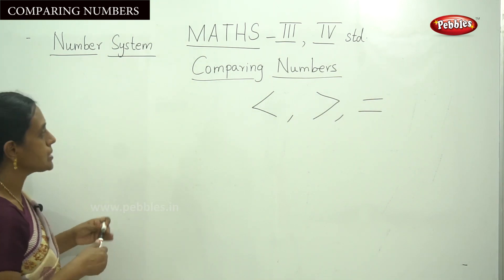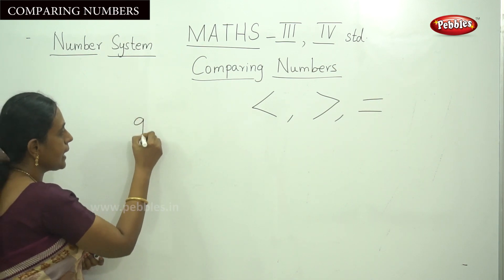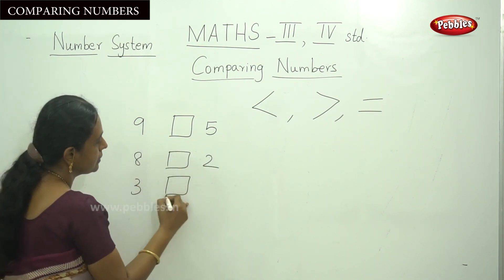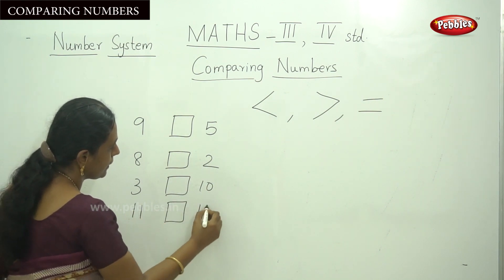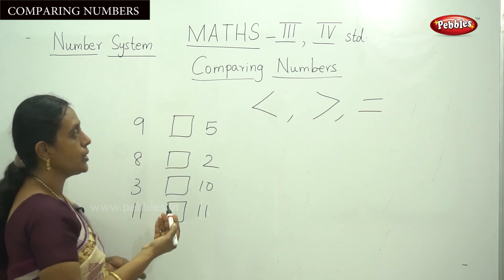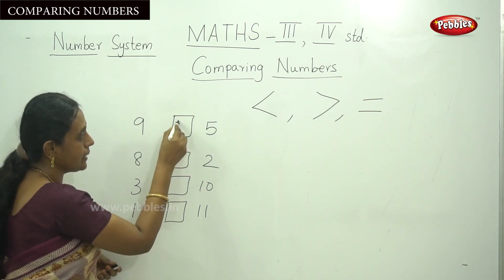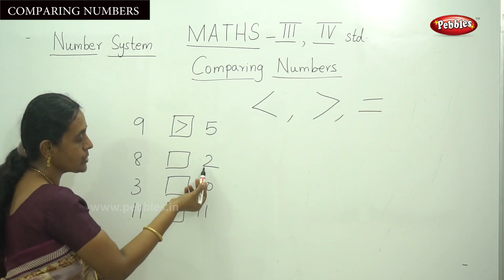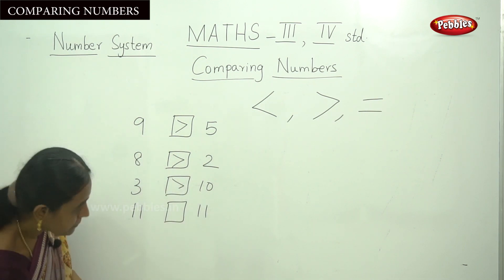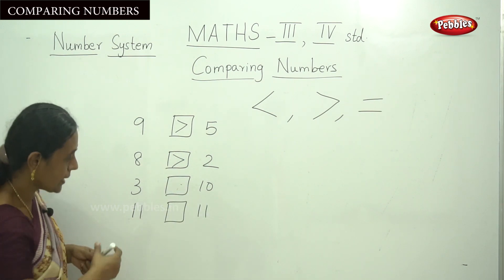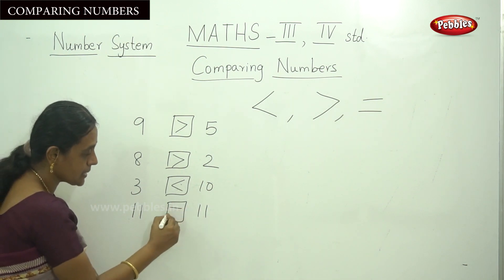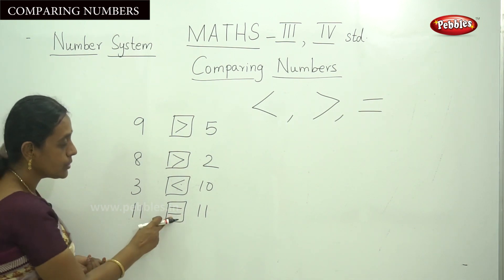I will show you simple single digit numbers: 9, 5, 8, 2, 3, 10, and 11 and 11. This is from your first and second standard grade level. Now we are going to recap our previous lesson. 5 is lesser than 9, and 2 is lesser than 8. Here, 10 is a bigger one, so 3 is lesser than 10. And here 11 and 11 — left hand side and right hand side, the number is equal, so you put the equal sign.